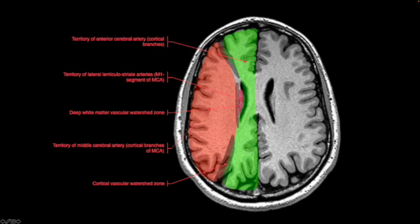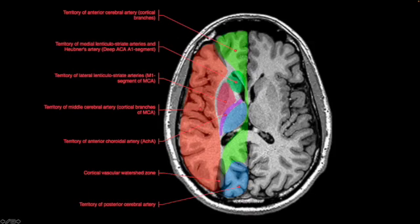The red supplied by the middle cerebral artery. And then we have some smaller perforating branches that come in and supply portions of the basal ganglia, like the body of the caudate nucleus here.